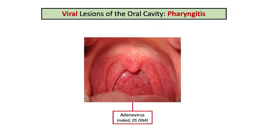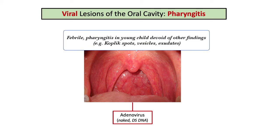Let's move on to adenovirus — the most common virus causing viral pharyngitis. In these vignettes, a patient will be described with an erythematous appearing pharynx devoid of any exudates, ulcers, and vesicles. You'll know it's a viral pharyngitis based on the lack of other findings and complications. The buzzword is febrile pharyngitis in patients under three years old, as this is the most common population affected with adenovirus pharyngitis.